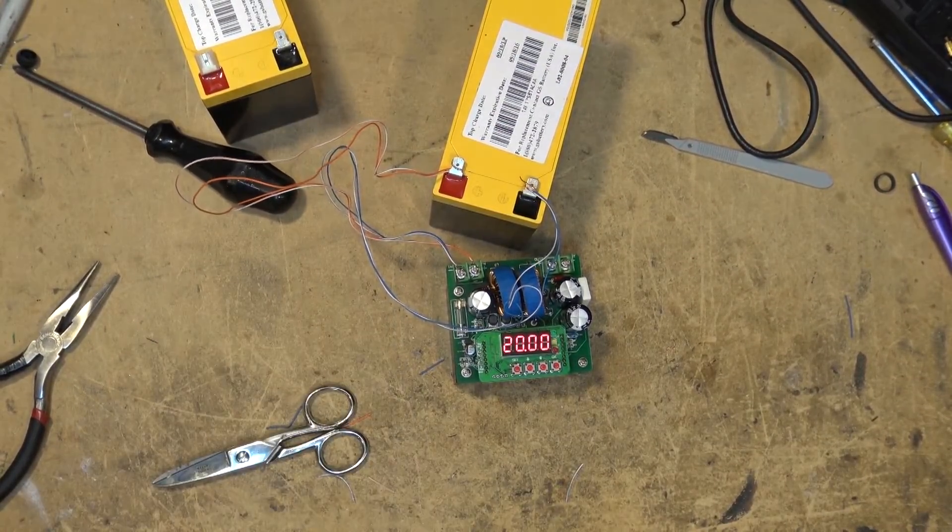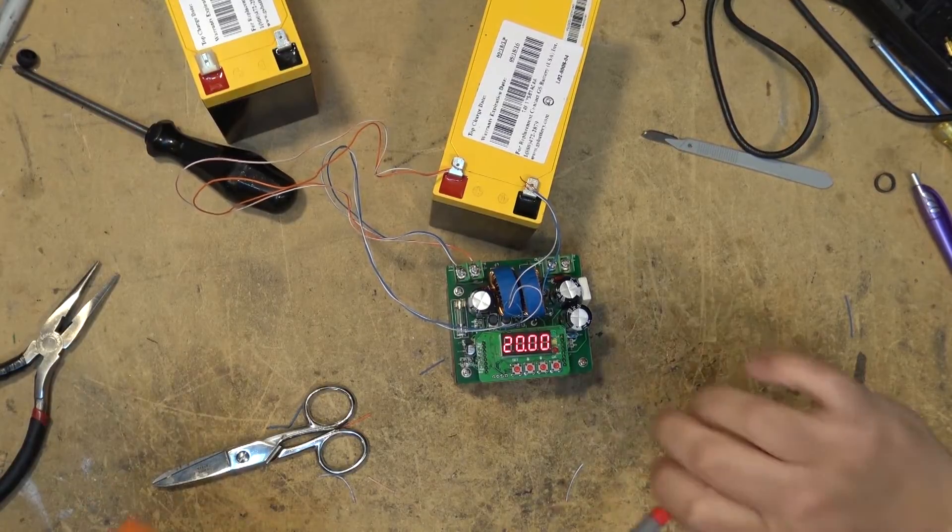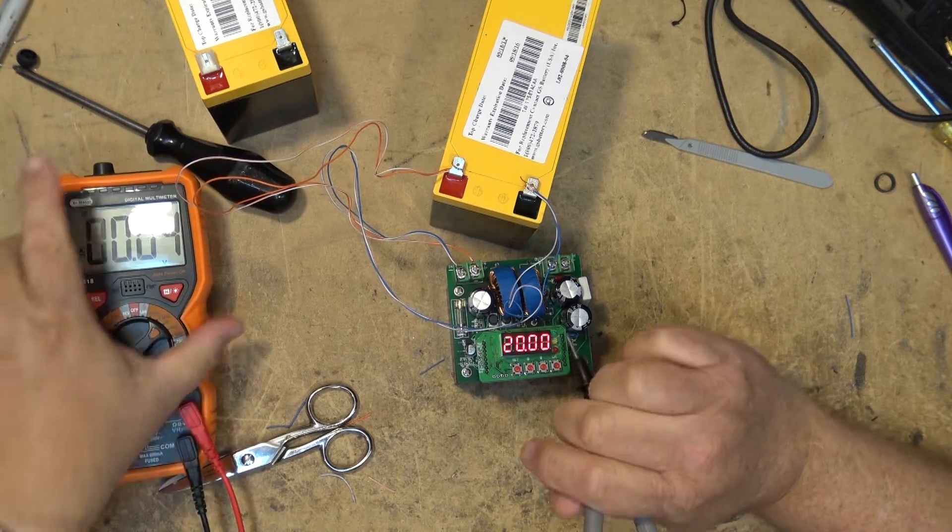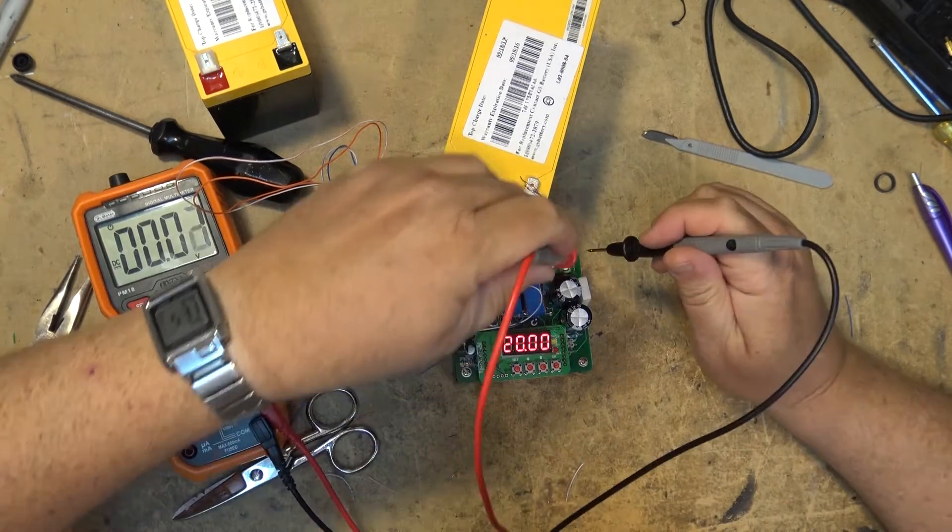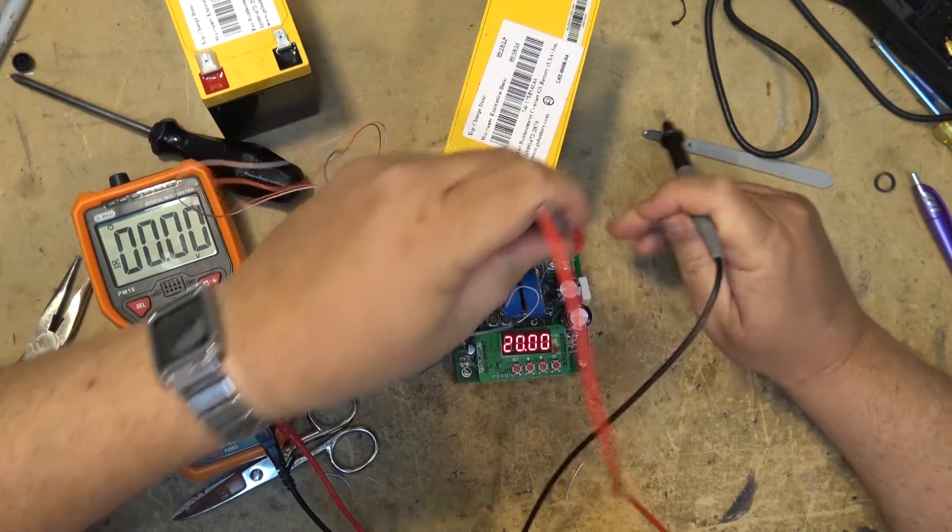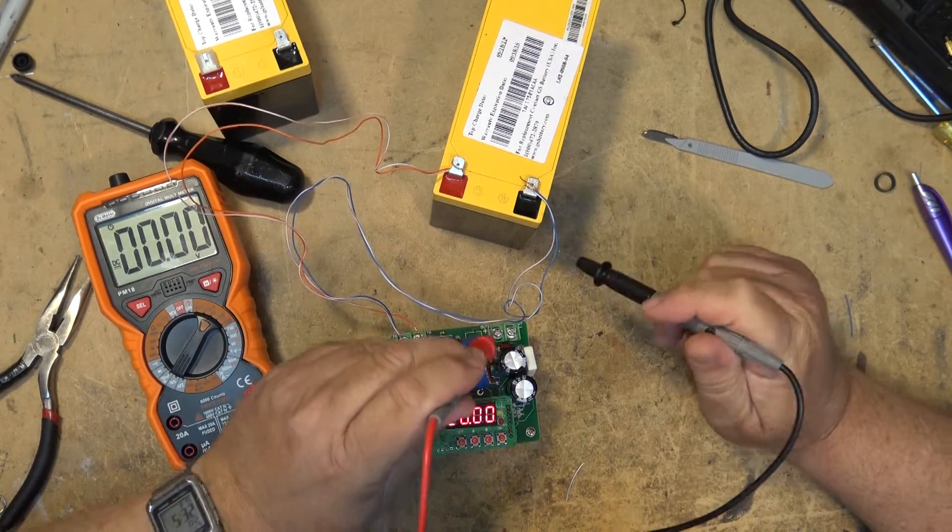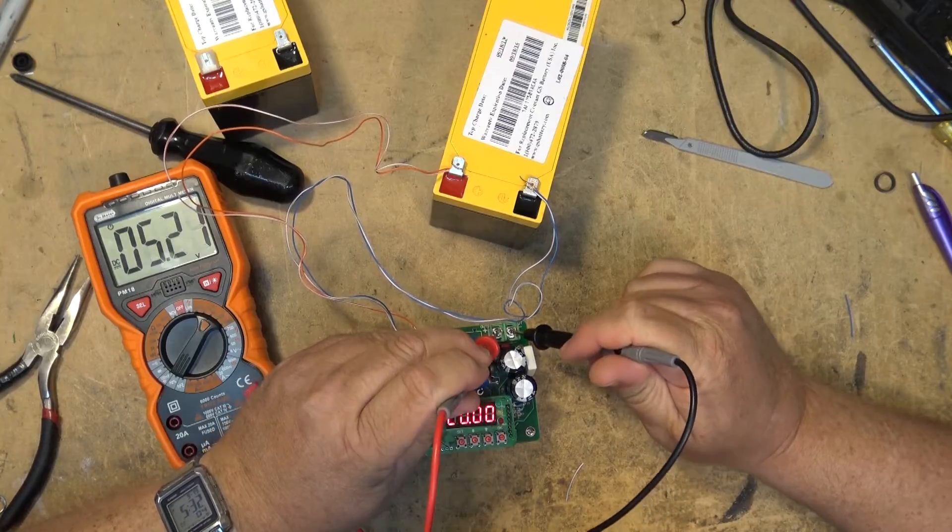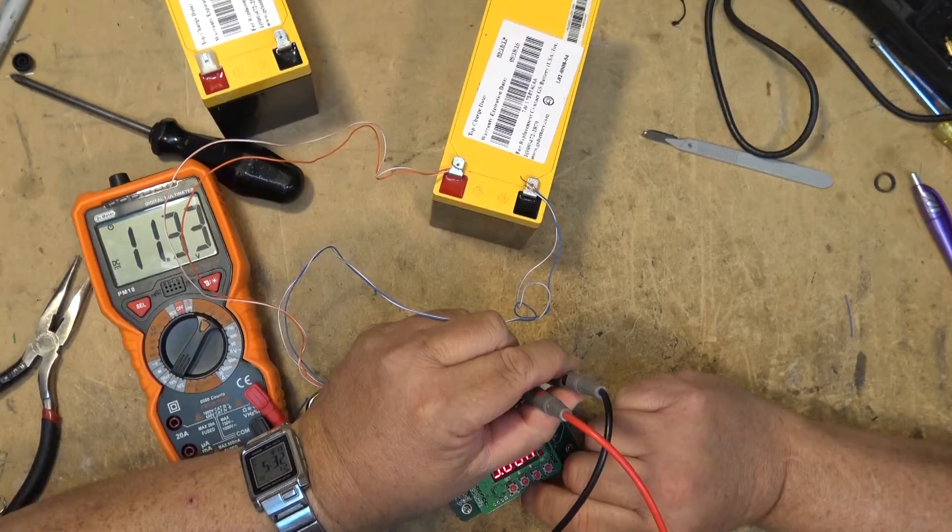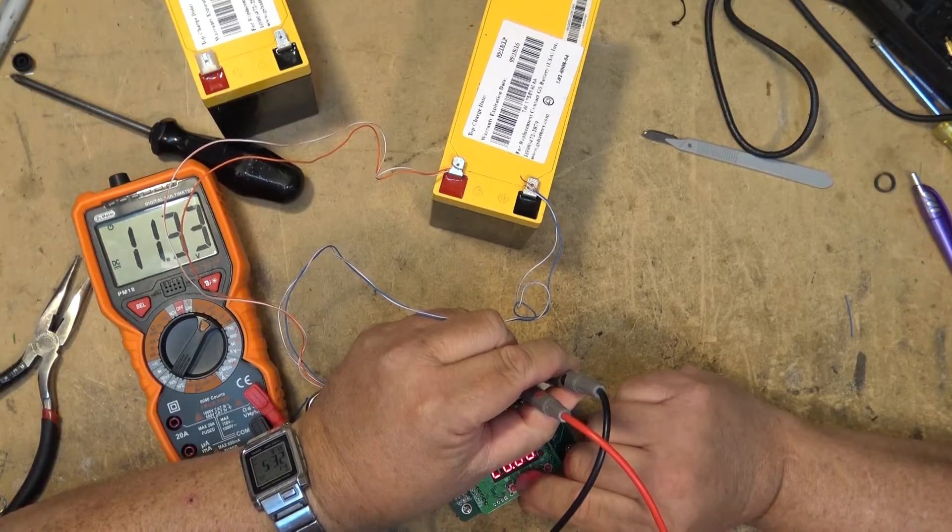We can find that out pretty easy by just grabbing a voltmeter. I'll put the voltmeter across the output terminals, positive and negative. Here's the positive terminal, it's 11 volts.